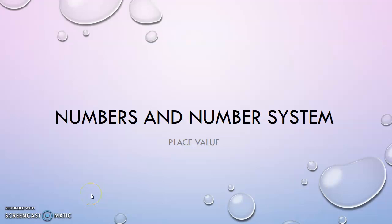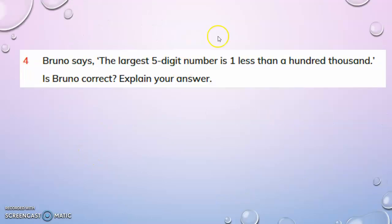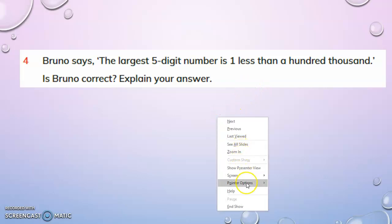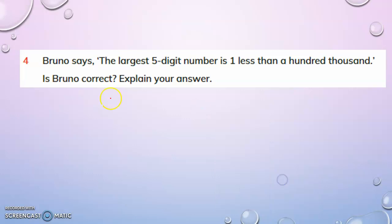Hello children, let us continue with our lesson on place value. Bruno says the largest five-digit number is one less than a hundred thousand. We know the largest five-digit number is obtained by putting nine in all the five place values.